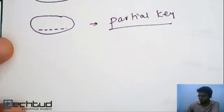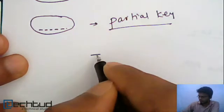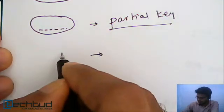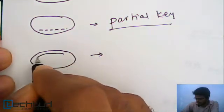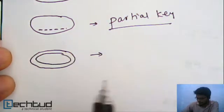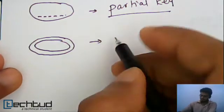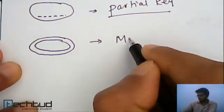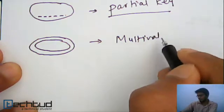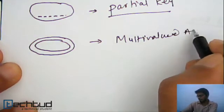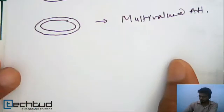Now, next you will understand. Next we have something represented by double ellipse. Again, double. So, this is multiple. So, this is multi-valued attribute. Multi-valued attribute. This we know already. Right?